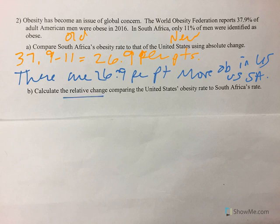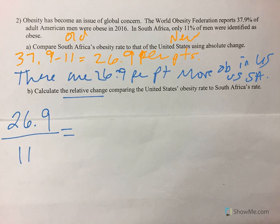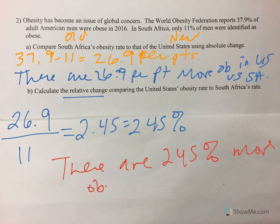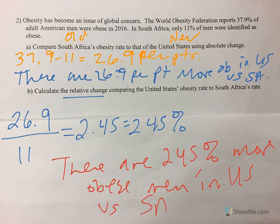It's easier to talk about relative change. New minus old — 26.9 — divided by 11, because South Africa is still our reference, gives 2.45, which is 245%. That means there are 245% more obese men in the U.S. versus South Africa. That's crazy — it's way more than double, so that makes sense.